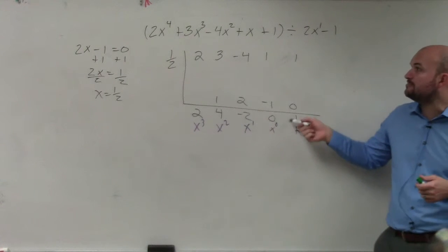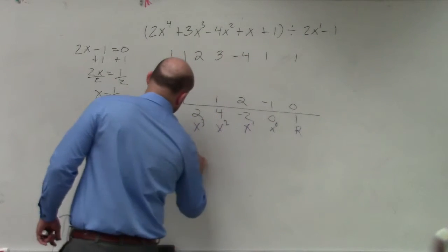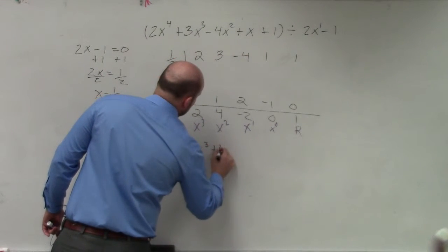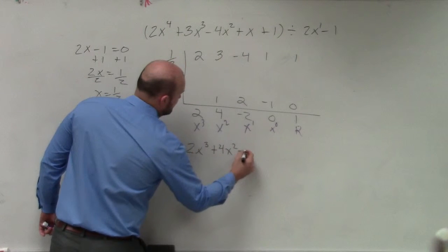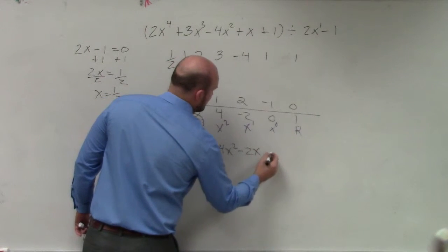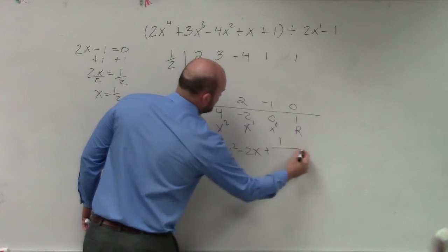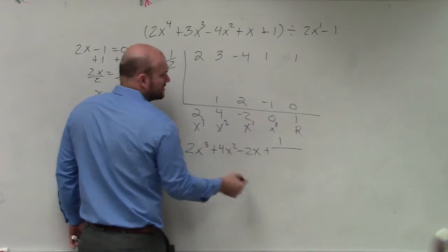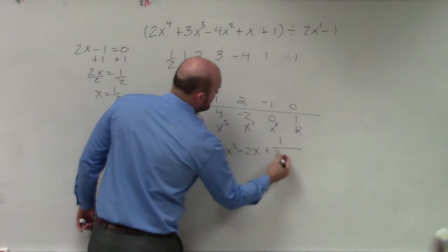Remember, always write your remainder over your divisor. So the final answer is 2x cubed plus 4x squared minus 2x plus my remainder. Because my constant is 0, I don't need to include that, my remainder over my divisor.